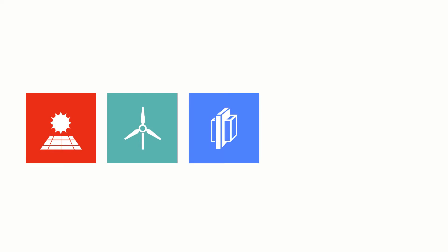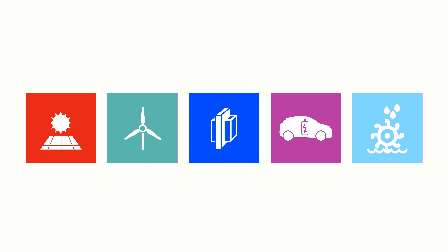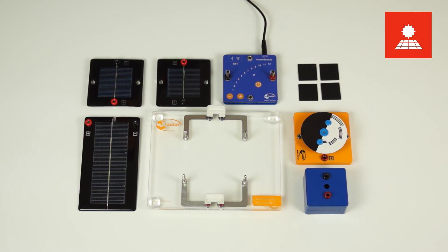With these components, five topics about renewable energies can be dealt with. To strengthen the skills about the technology of photovoltaics, the training kit includes a solar cell and two solar modules which differ in size.